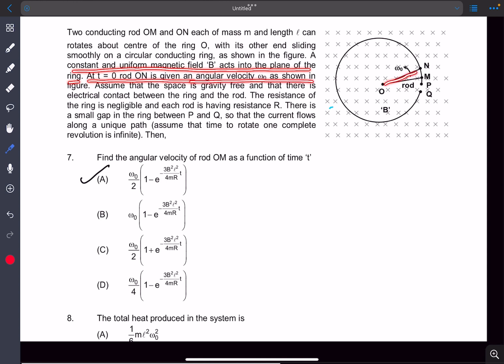Just this rod is given an angular velocity of omega naught. We have to assume that the space is gravity free and there is electrical contact between the ring and the rod. The resistance of the ring is negligible and each rod has resistance R. There is a small gap in the ring between P and Q so that the current flows along a unique path. Assume that the time to rotate one complete revolution is infinite, so basically it takes a lot of time to complete a revolution.